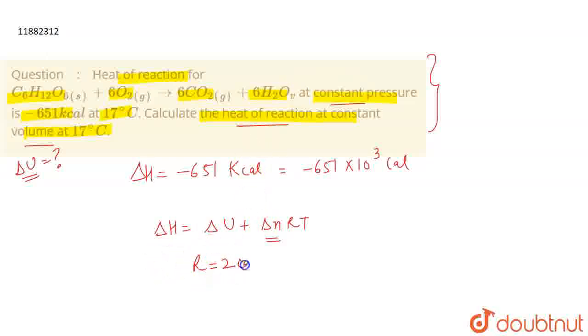Now, we have the calorie unit. R is equal to 2 calories per Kelvin per mole. So we have to take this temperature. The temperature is 17 degree Celsius. This is 290 Kelvin.